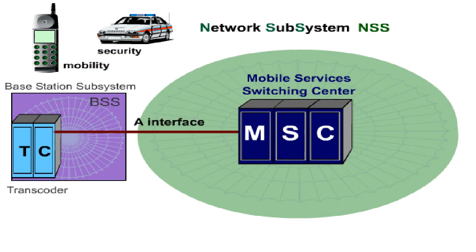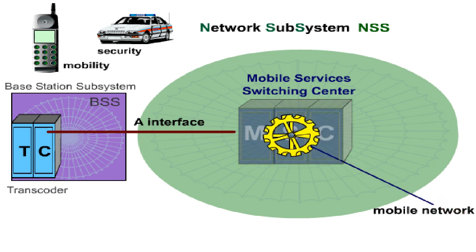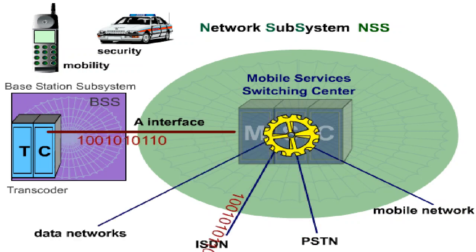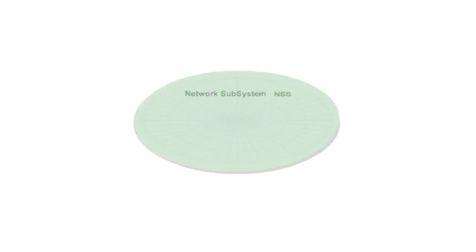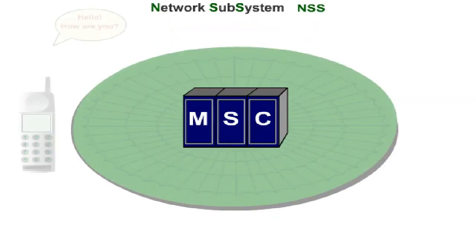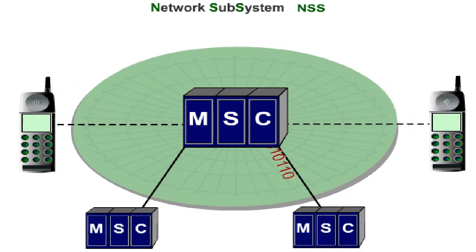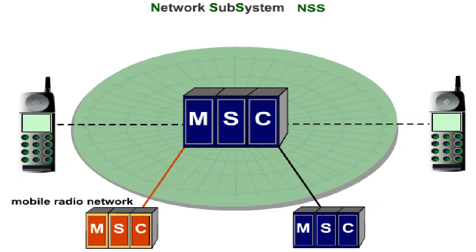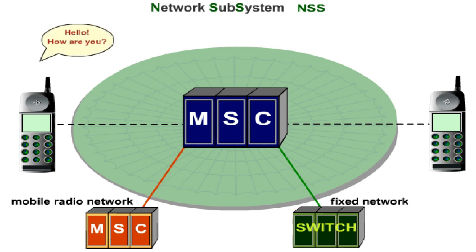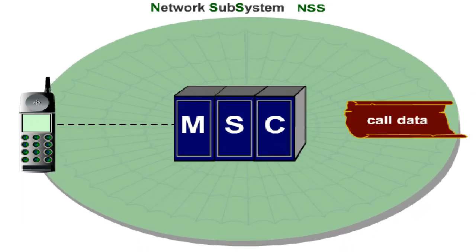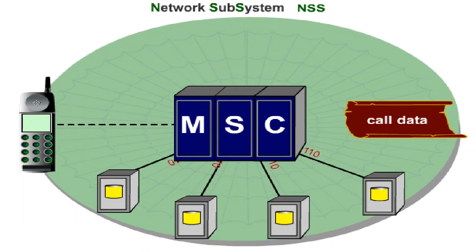The MSC serves as a digital exchange for the forwarding of messages, connecting mobile subscribers with each other or with subscribers in other networks such as the public switch telephone network, the ISDN network, or data networks. The MSC is responsible for the following functions: it forwards incoming and outgoing calls; it makes connections to other MSCs in the same mobile radio network and to other mobile radio networks and fixed networks; it monitors and controls the calls; and it's responsible for call data acquisition and the forwarding of signalling information to connected registers or databases.